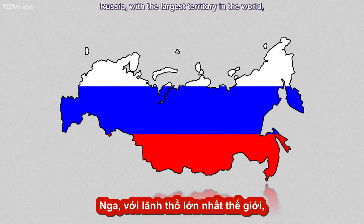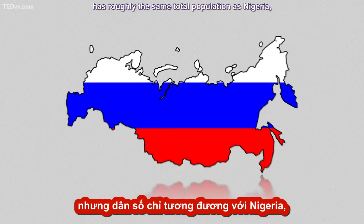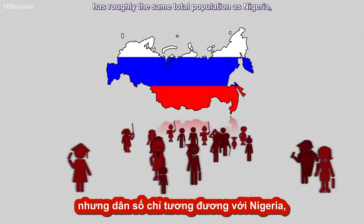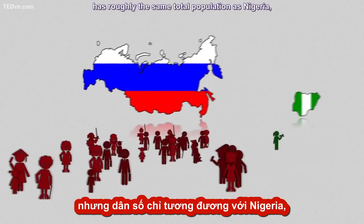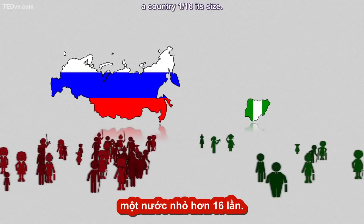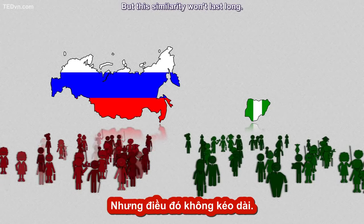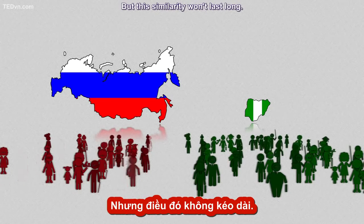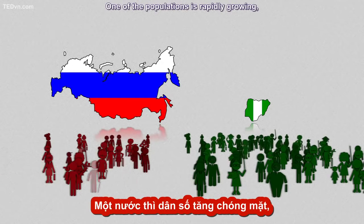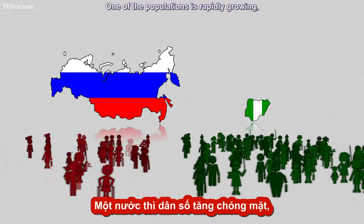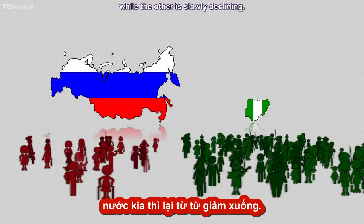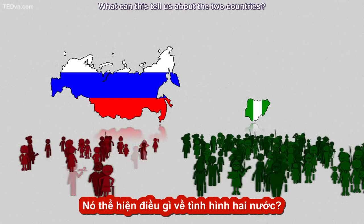Russia, with the largest territory in the world, has roughly the same total population as Nigeria, a country one-sixteenth its size. But this similarity won't last long. One of the populations is rapidly growing, while the other is slowly declining. What can this tell us about the two countries?